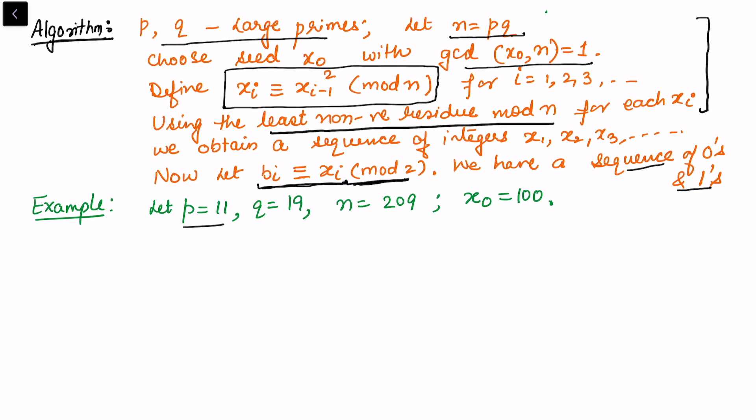is 209. And the seed is x naught which we take as 100. So we can see that gcd of 100 and 209, that is x naught and n, their gcd is 1, so this satisfies our condition. So we